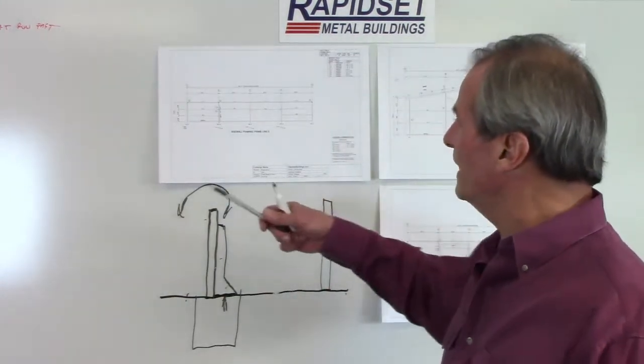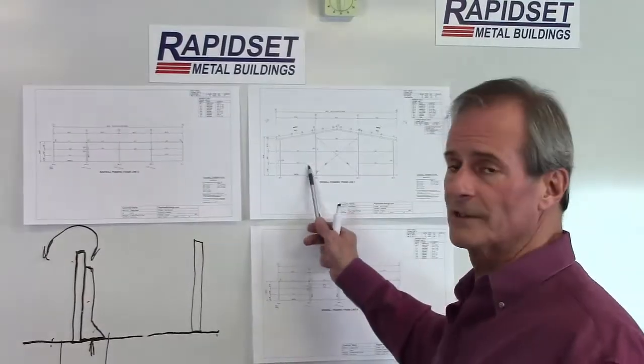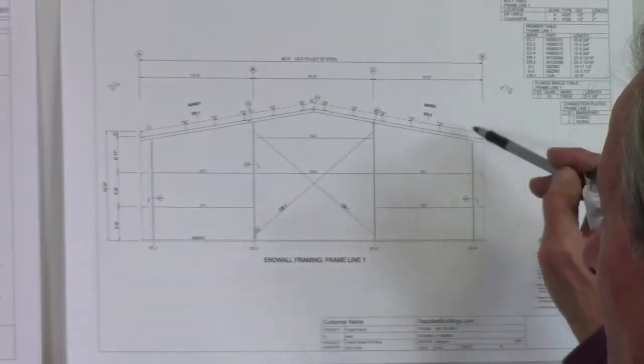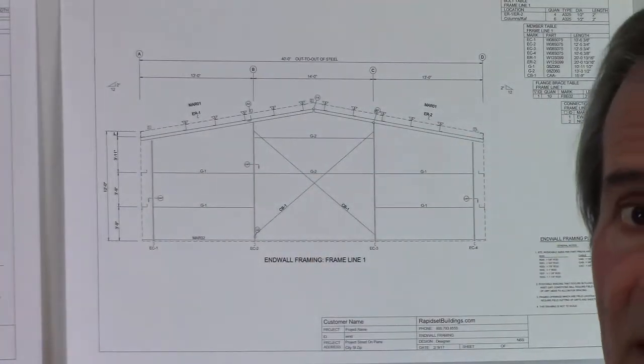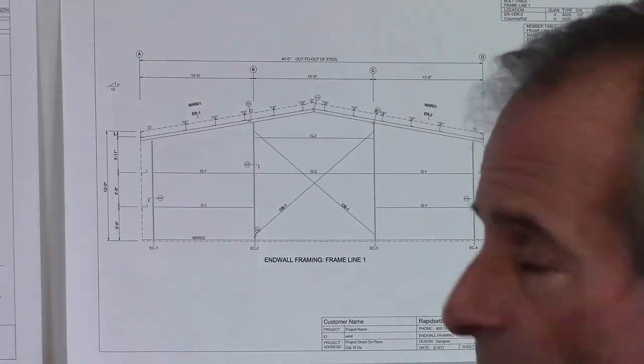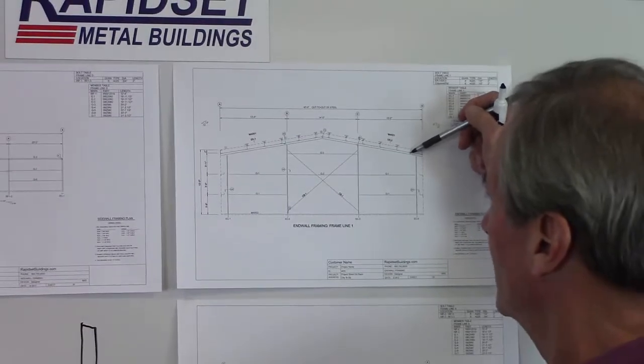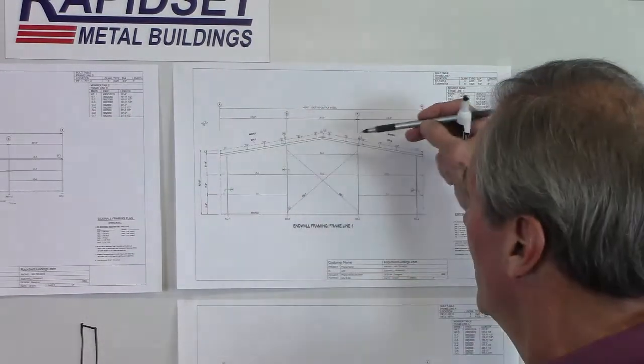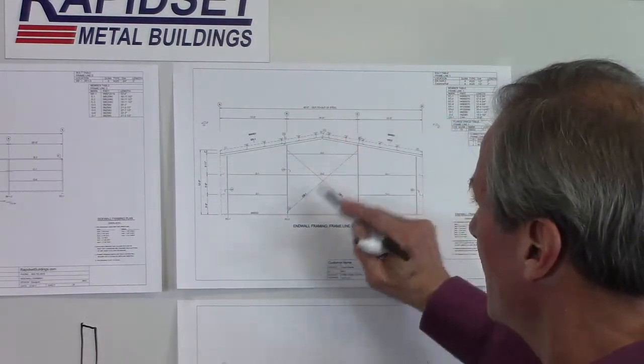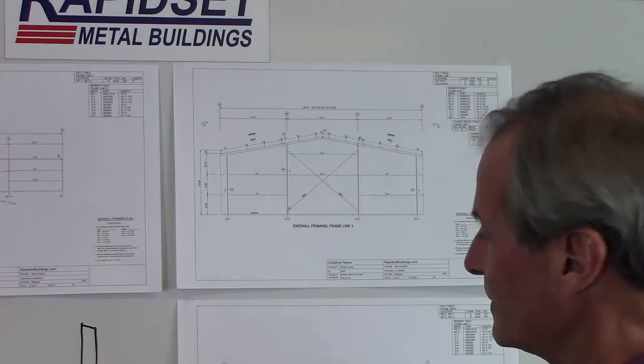One other one that we have for an end wall, if you're taking all this up in framed openings, is we can either make it a rigid frame, which is going to add cost to it, because a rigid frame will stop any kind of lateral movement, or we can go to what's called column to frame. And that is, we'll take the cross bracing back to the very next frame and support the end wall that way.